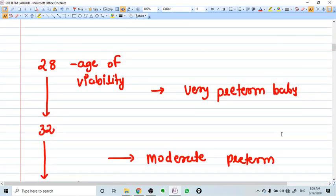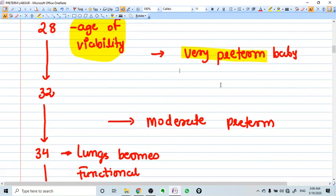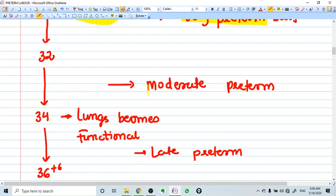The 28th week is the age of viability all over in India. Actually in the world it is taken as 22 weeks, but for all practical purposes viability is taken as 28 weeks. 28 to 30-32 weeks, if labor happens, it's called very preterm labor. 32 to 34 weeks, if labor happens, it's called moderate preterm.